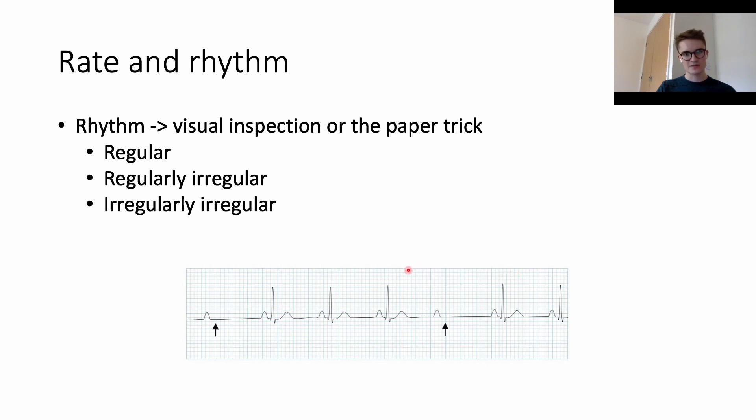That is not a regular rhythm because the distance has changed here. So then we could use our paper trick. We draw that arrow and say, okay, it actually looks regular there. Then there's a big gap and it falls off. And then if we bring it back up again, it looks regular again there.